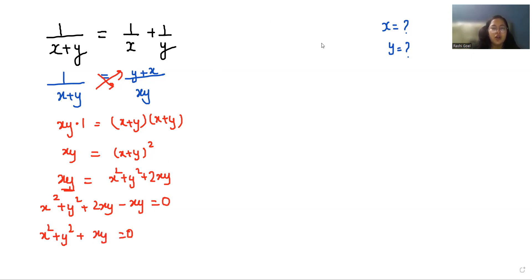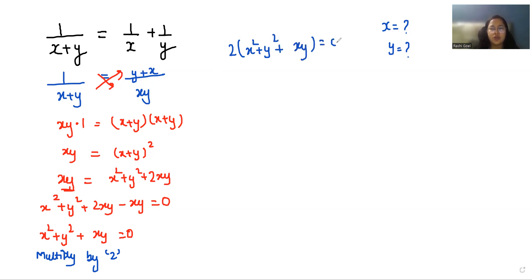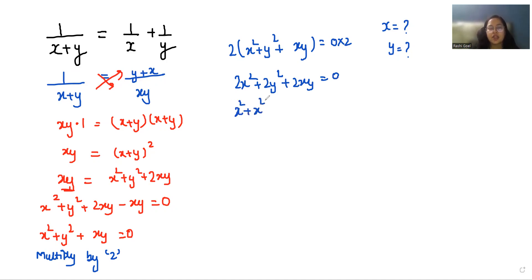So x² + y² + xy = 0. Now I am going to multiply by 2 throughout the equation, so it becomes 2x² + 2y² + 2xy = 0.